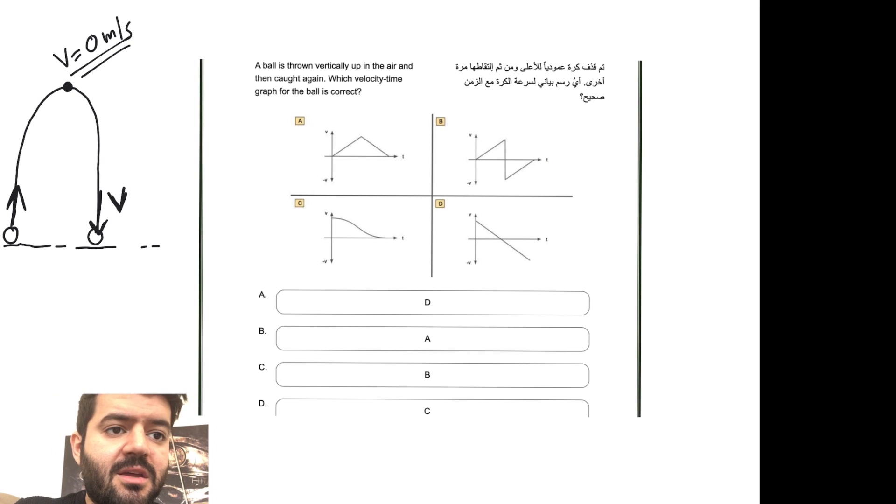If you take a look at option A, the velocity is increasing then it starts to decrease. Keep in mind the slope for the velocity time graph is the acceleration. However, this selection A does not make sense because once you throw something upwards the velocity will decrease, decrease, decrease, then it reverts and falls all the way down. This does not work because it shows me that the velocity is increasing over time, which is not the case.